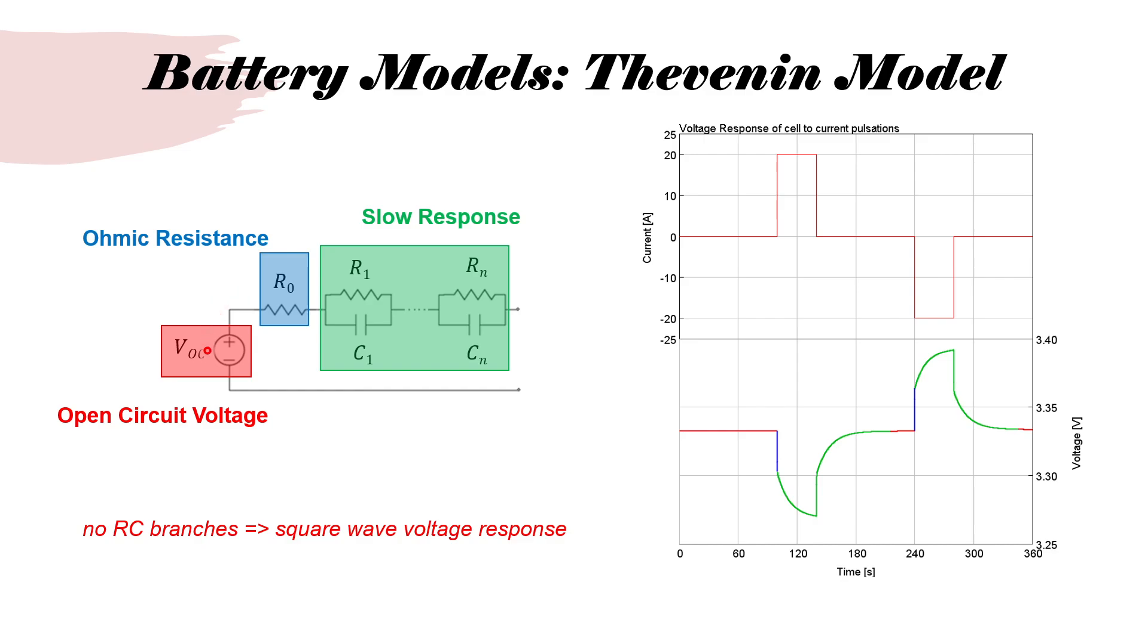The image on the left is Thevenin model. Thevenin model consists of open circuit voltage, ohmic resistance R0, and slow response due to dynamic behavior, which is captured by RC branches. You can have one, two, three, all the way to five RC branches. On the right, you can see a current pulse. There's a zero current followed by a positive current pulse, which represents discharge followed by a rest for a few minutes, followed by a negative current pulse, which indicates charge voltage and then rest again. At the bottom, you can see a voltage response of a battery.